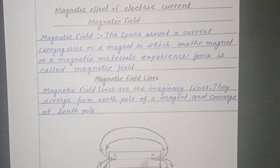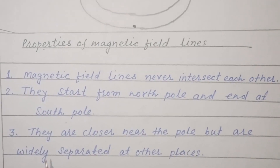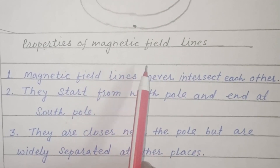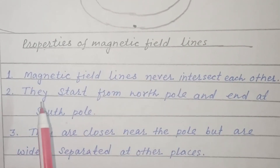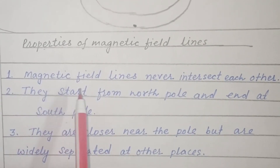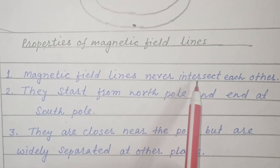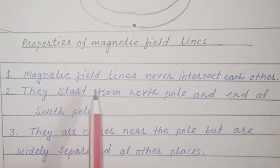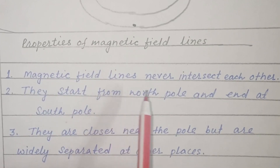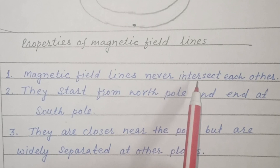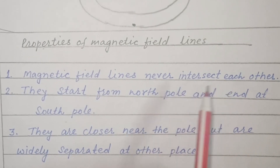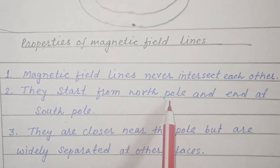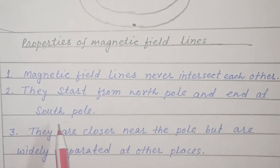Properties of magnetic field lines: number one, magnetic field lines never intersect each other. Number two, they start from the North Pole and end at the South Pole.